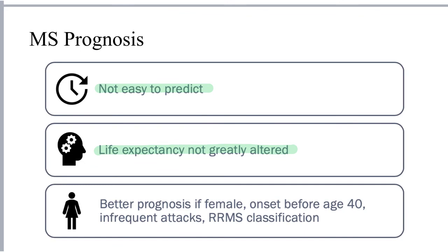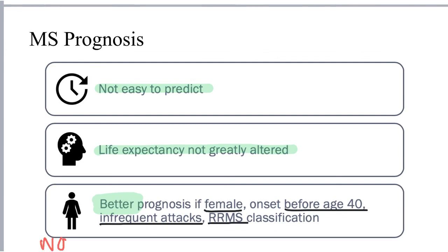Individuals typically have a better-than-average or more favorable prognosis if they are female, if the disease onset occurs before the age of 40, if the attacks or exacerbations are infrequent, and if they are classified as having relapsing-remitting MS as the clinical course. The reverse of that would indicate a more poor prognosis.